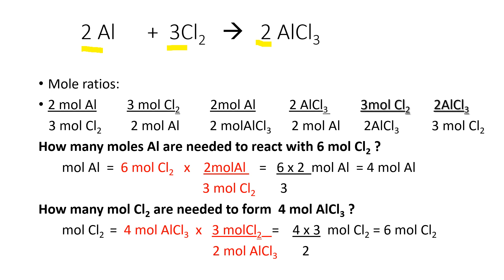Consider the equation: 2 moles of Al plus 3 moles of Cl₂ form 2 moles of AlCl₃. These are the possible mole ratios. How many moles of Al are needed to react with 6 moles of Cl₂? Given times conversion factor — unknown Al over given Cl₂ — cancel moles of Cl₂: 6 times 2 divided by 3 equals 4 moles of Al.